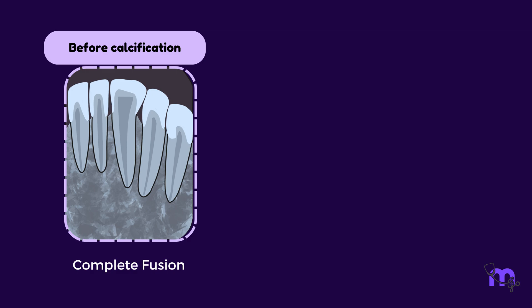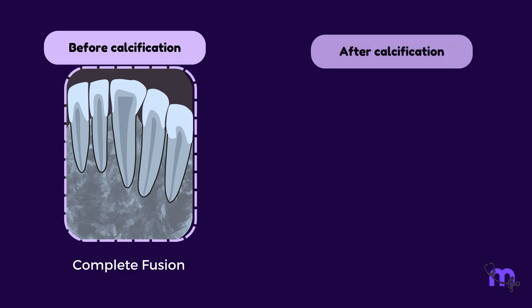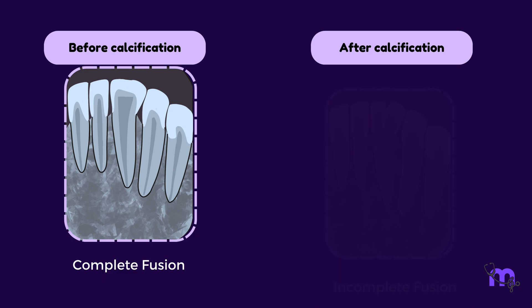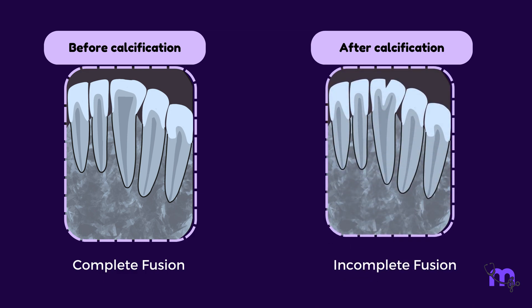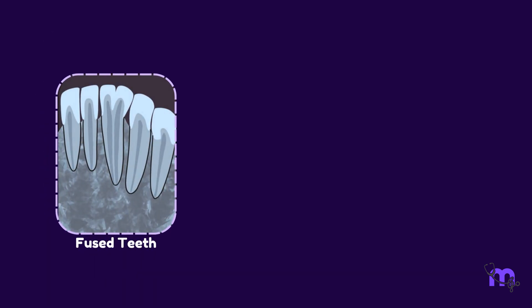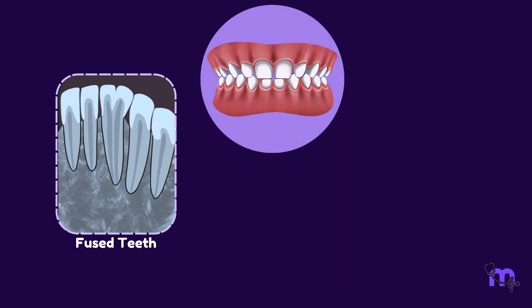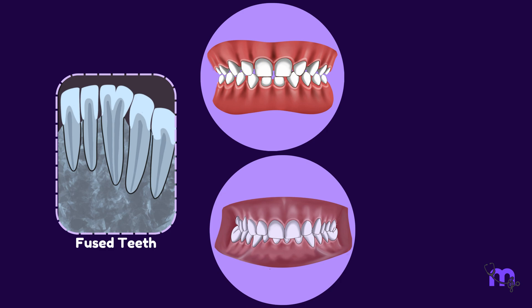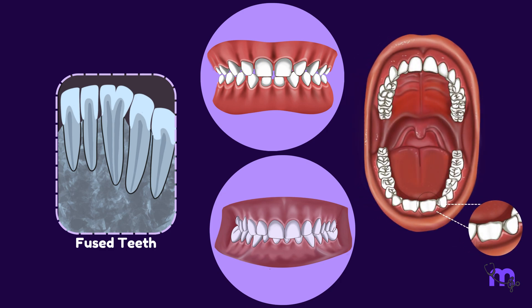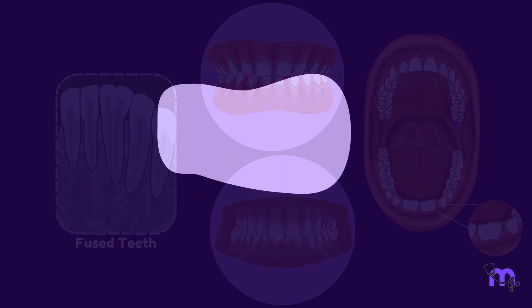However, if contact occurs after calcification, it results in an incomplete fusion where only the roots may fuse. In such cases, these fused teeth can have either separate or conjoined root canals. It is observed in both deciduous and permanent dentition. It is more frequently encountered in the mandibular anterior teeth. And that's a wrap.